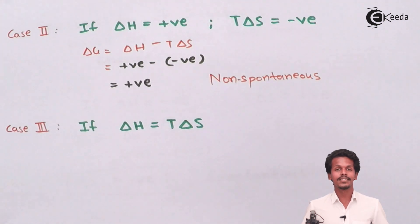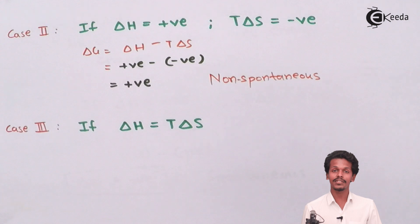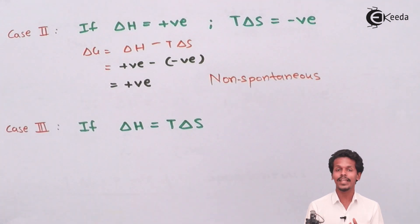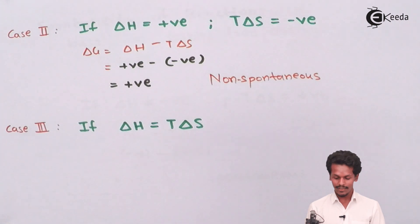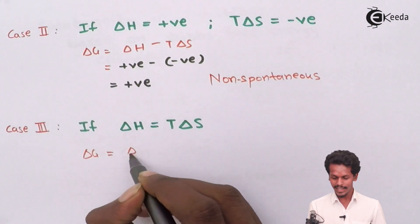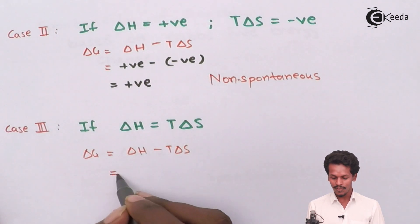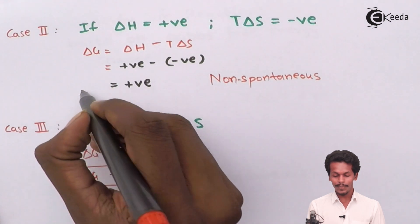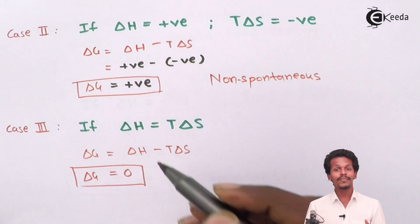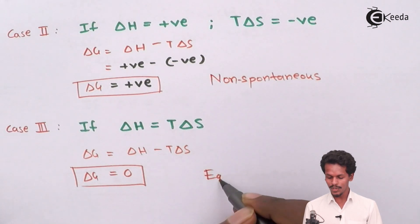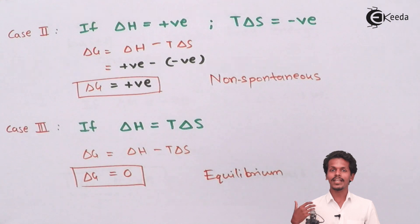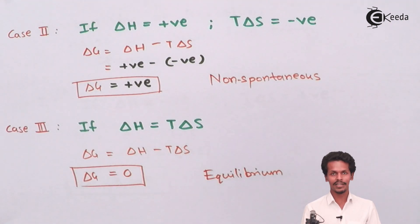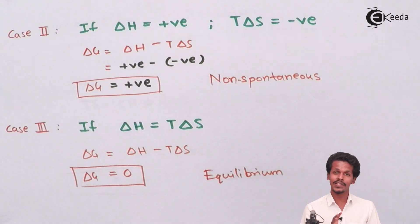For Case 3, if ΔH and TΔS have the same magnitude, then ΔG = ΔH − TΔS = 0. This condition is only observed when the process is at equilibrium. So to summarize: if ΔG is negative, the reaction is spontaneous; if ΔG is positive, the reaction is non-spontaneous; and when ΔG equals zero, the process is at equilibrium.